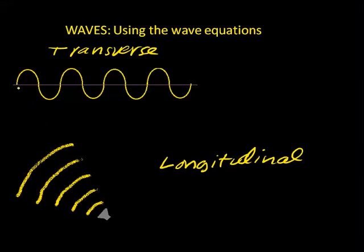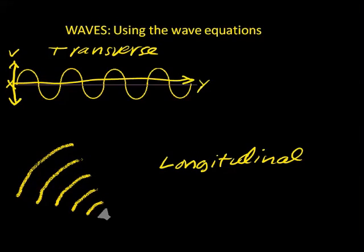For instance, if you're holding a rope between two people, one at point X and one at point Y, and the person at point X shakes the rope up and down like this, then that regular, repeating, shaking motion is the vibration. That shaking motion is going to transfer energy to the rope, and the energy is going to move along that rope to the person at point Y. So that represents the direction that the energy is traveling.